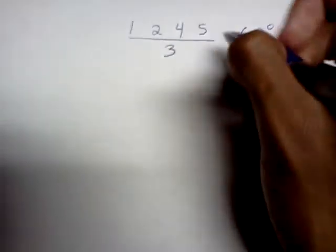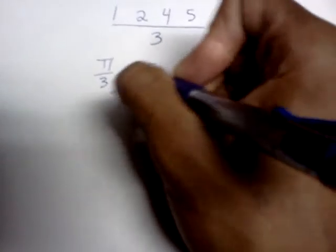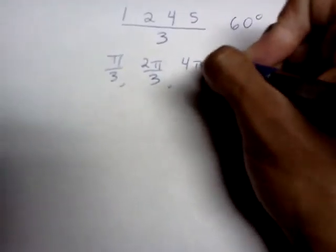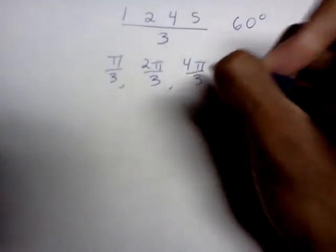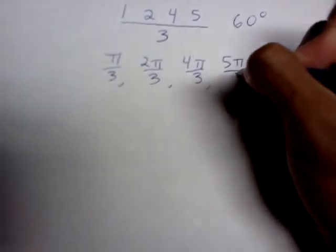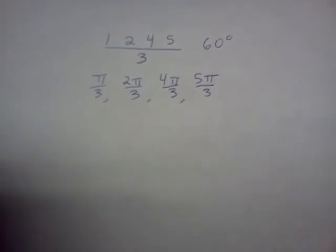Now, adding pi to each of these numbers, we get pi over 3 in the first quadrant, 2 pi over 3 in the second quadrant, 4 pi over 3 in the third quadrant, and then 5 pi over 3 in the fourth quadrant. And that's pretty much it. There you go. I hope you enjoyed it. So let's go through it one more time just to make sure you got it.